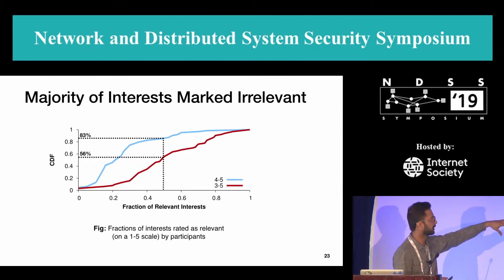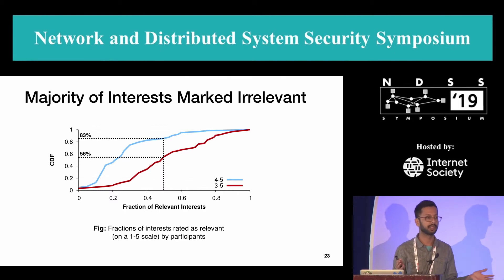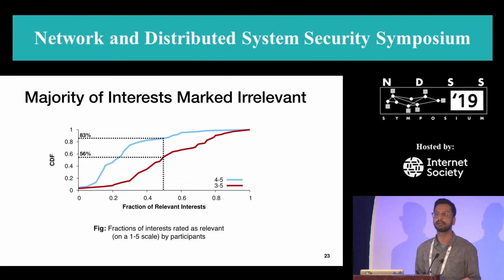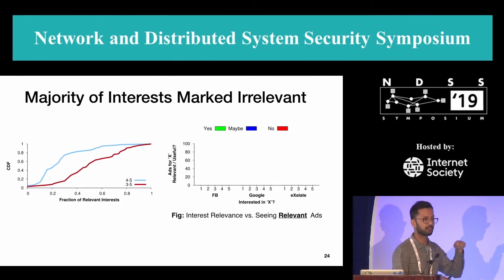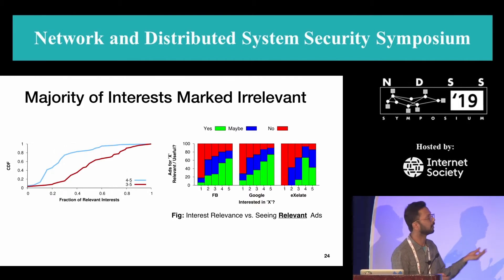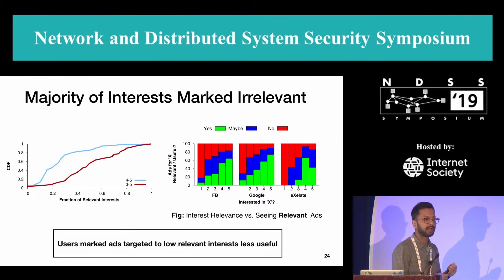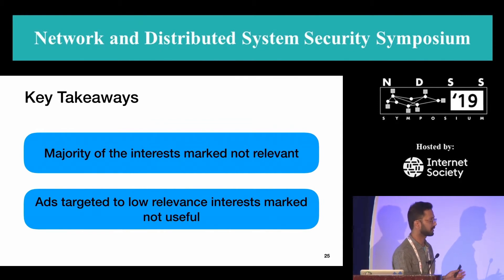Recall that the majority of interests were marked not relevant. An advertiser could argue that users are not in the best position to determine whether an interest is relevant unless they are shown an ad about it. So we mapped this to our other dynamic question, where we asked whether the ad was relevant to the user, conditioned on them having seen the ad. Looking at this graph, users did not find ads useful when the underlying interest had low relevance, which means that ads targeted against low-relevant interests are potentially wasted money.